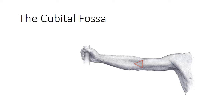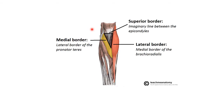The cubital fossa is an anatomical space located just in front of the elbow joint. It is a pathway by which structures enter and leave the forearm. It is triangular in shape with three borders, a floor and a roof.